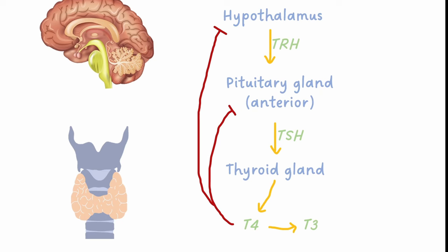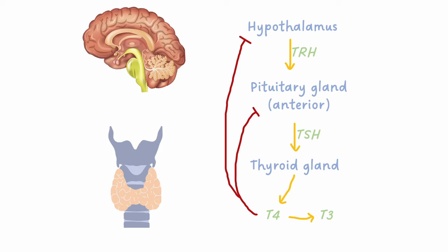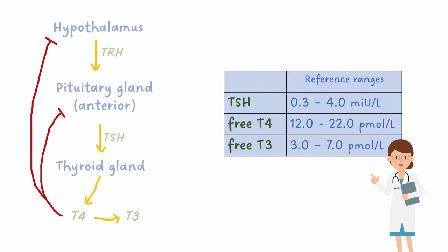This circuit allows for a relatively consistent level of thyroid hormone production. It's also useful for us when interpreting the thyroid function test, as it allows us to identify which part of the axis might be going wrong.